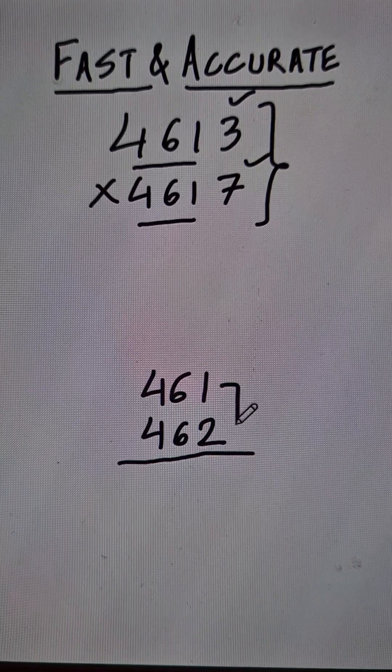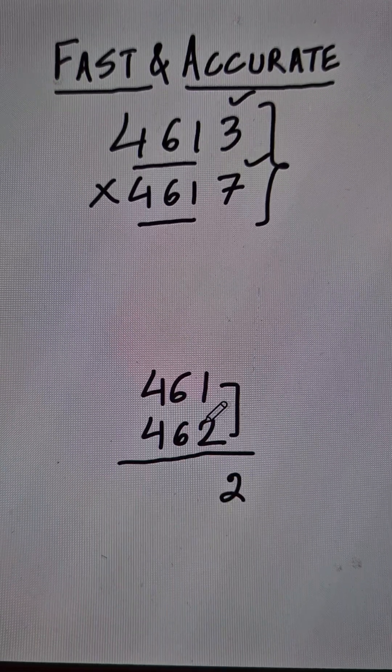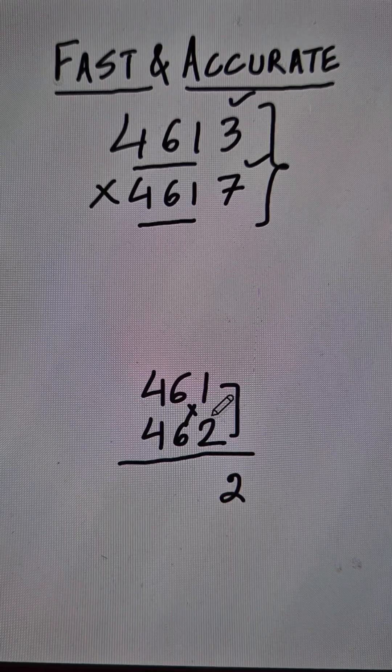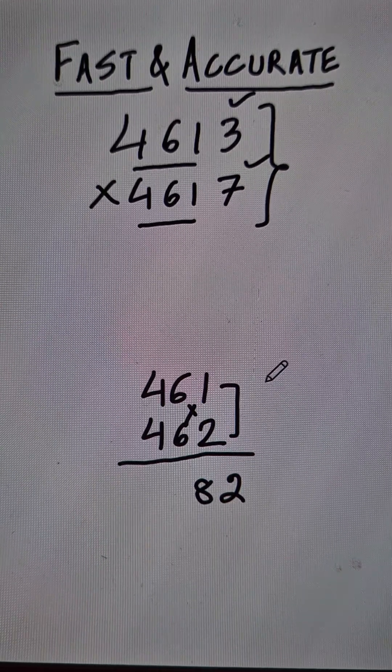Now for that, I will be using vertical and crosswise. So 1 into 2 is 2, and then cross multiply the last 2. That is 6 into 2, 12 plus 6, 18. So 8 and remember 1 carry.